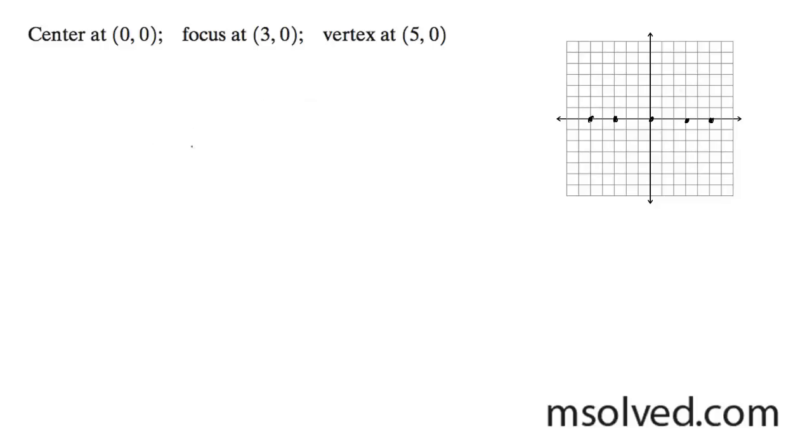And based off of this, we can go ahead and find our minor axis. What that's going to be is our focus, which is 3 squared, and then we have our major axis, which is 5 squared, and then minus our b squared, which is our y we don't know.